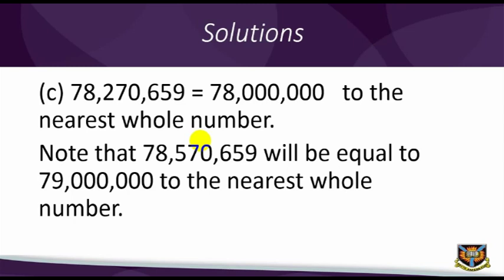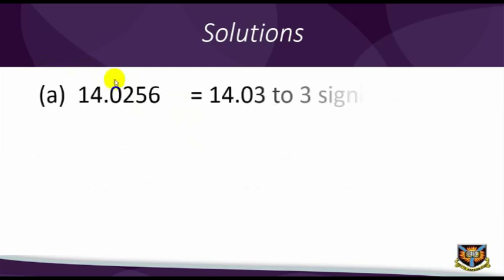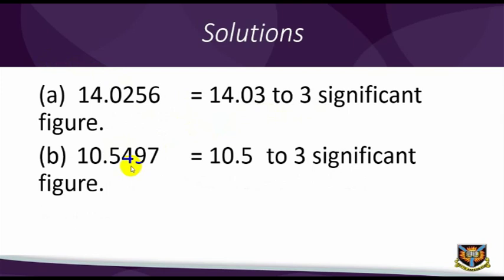A. 14.0256 is equal to 14.03 to 3 significant figures. B. 10.5497 is equal to 10.5 to 3 significant figures.